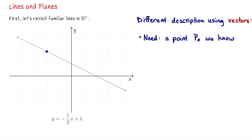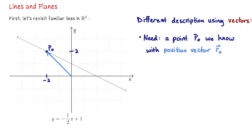I could pick the y-intercept, but let me pick this other point I know lives on this line. So I'll let P₀ be the point (-2, 2). If P₀ is the point (-2, 2), then its position vector is the vector (-2, 2). In our line notation, we'll call this position vector R₀. They have the same coordinates — it's just a slight distinction between what kind of object it is. P₀ is the point; R₀ is the vector which starts at the origin and lands on the point P₀.